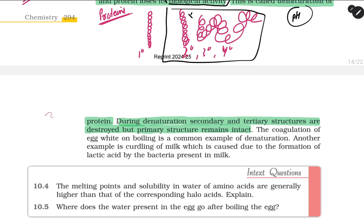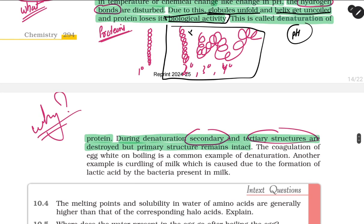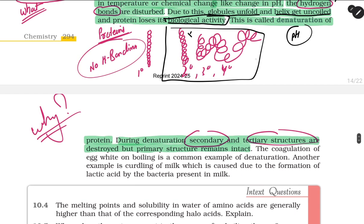This is a very famous question also: why in denaturation are only secondary and tertiary structures destroyed but primary is not destroyed? Because the primary structure does not have hydrogen bonding.